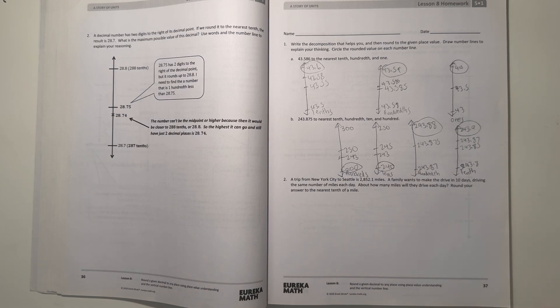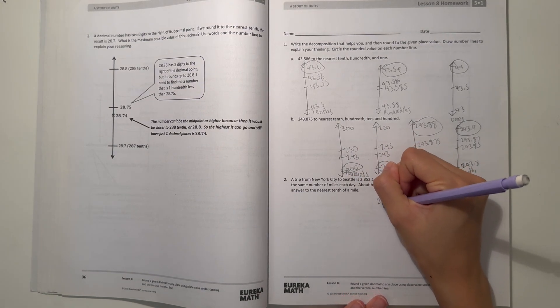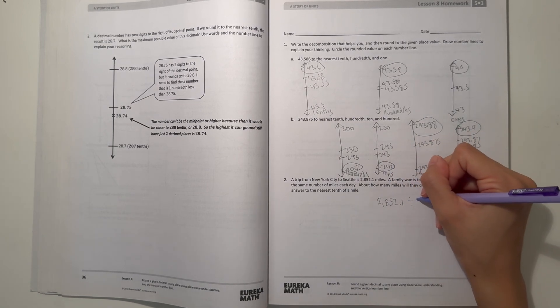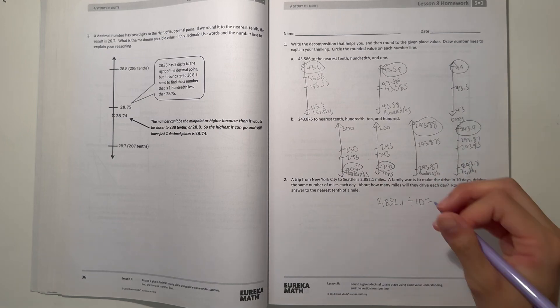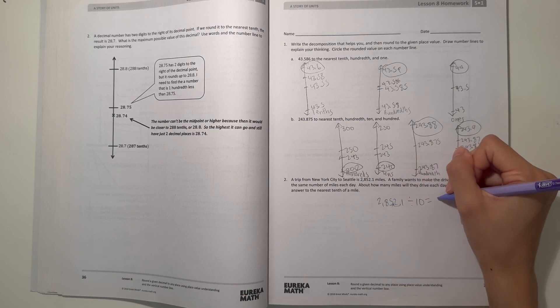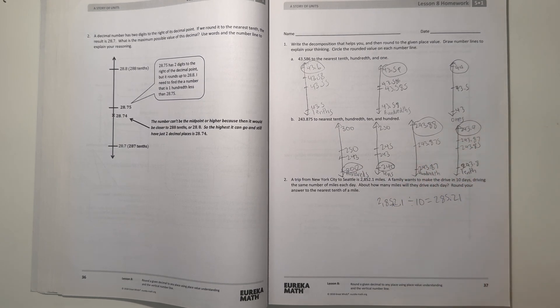Alright, number two. A trip from New York City to Seattle is 2852.1 miles. A family wants to make the drive in 10 days, driving the same number of miles each day. About how many miles will they drive each day? Round your answer to the nearest tenth of a mile. So let's see 2852.1. We're dividing by 10. So when we divide by 10, just move the decimal one point to the left. That would be 285.21.